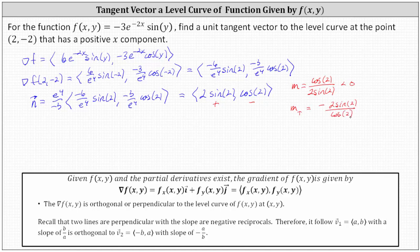We can use this to determine a tangent vector to the level curve at the given point. We need to be careful — the numerator is the change in y and the denominator is the change in x. So the x component can be either cosine two or negative cosine two. Since cosine two is negative, we need negative cosine two, which means the y component must be positive two sine two.